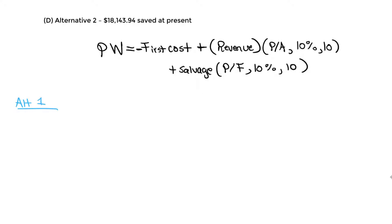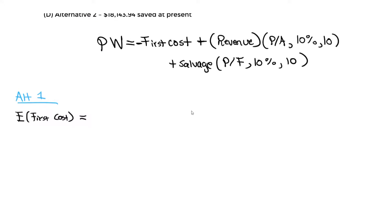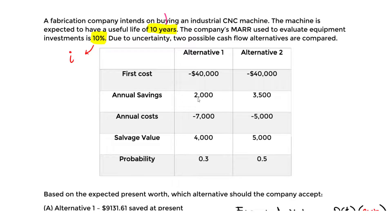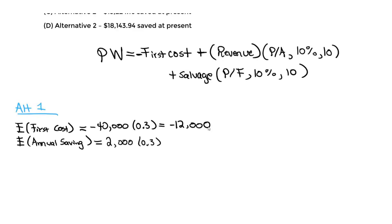For alternative one, the expected value of the first cost is -40,000 × 0.3 = -$12,000. The expected value of the annual saving is 2,000 × 0.3 = $600.